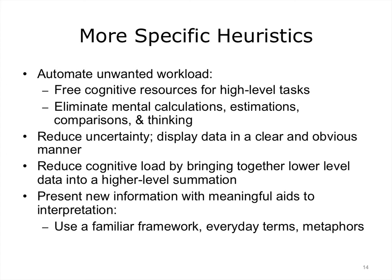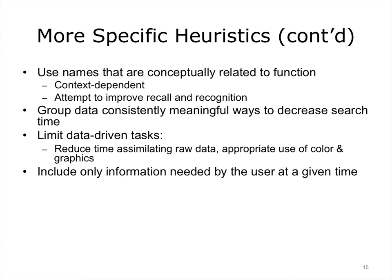Some researchers have taken Nielsen's heuristics and tried to make them more specific or tailored to a particular context. The heuristics proposed by Gerhardt-Powels are focused on judging a system in terms of how much energy expenditure is necessary to perform a set of tasks. They focus on displaying data in a clear and obvious manner and bringing together lower-level data to a higher-level summation — principles that are very important in terms of data analytics.